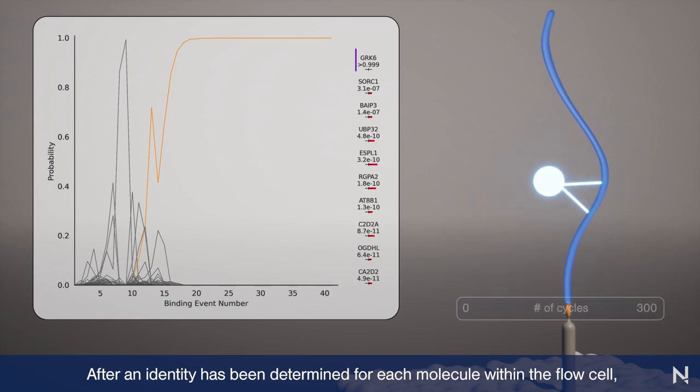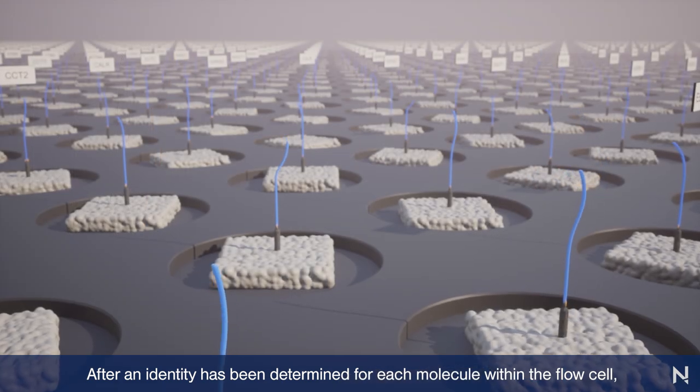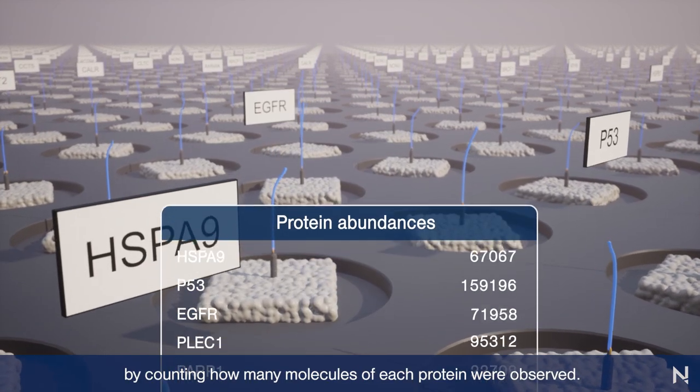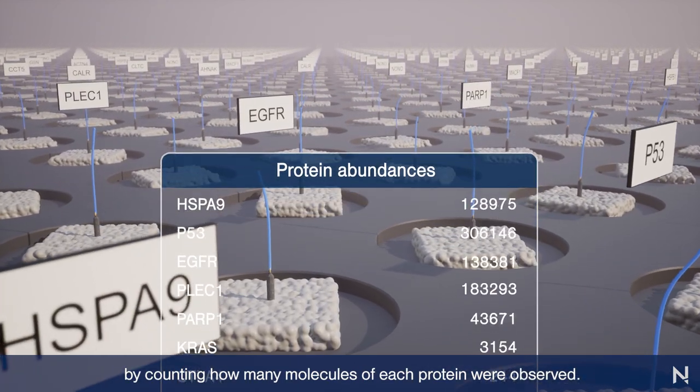After an identity has been determined for each molecule within the flow cell, quantification is performed by counting how many molecules of each protein were observed.